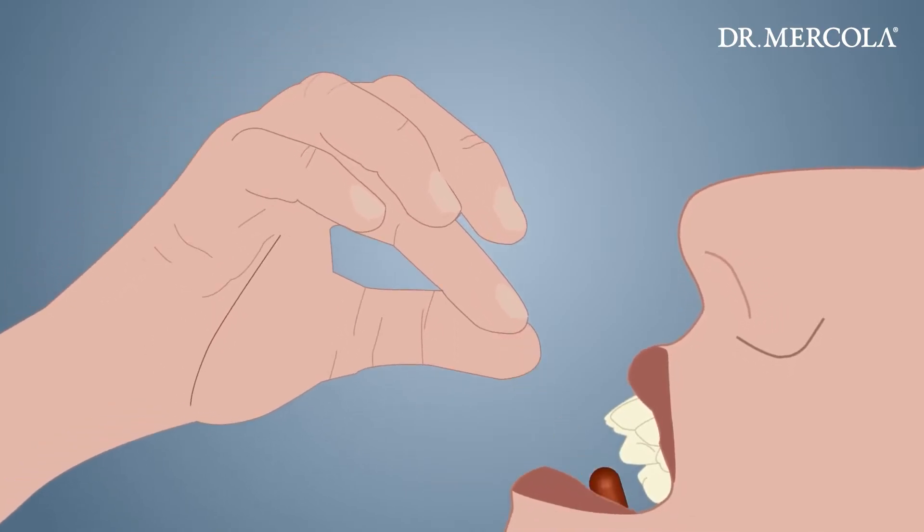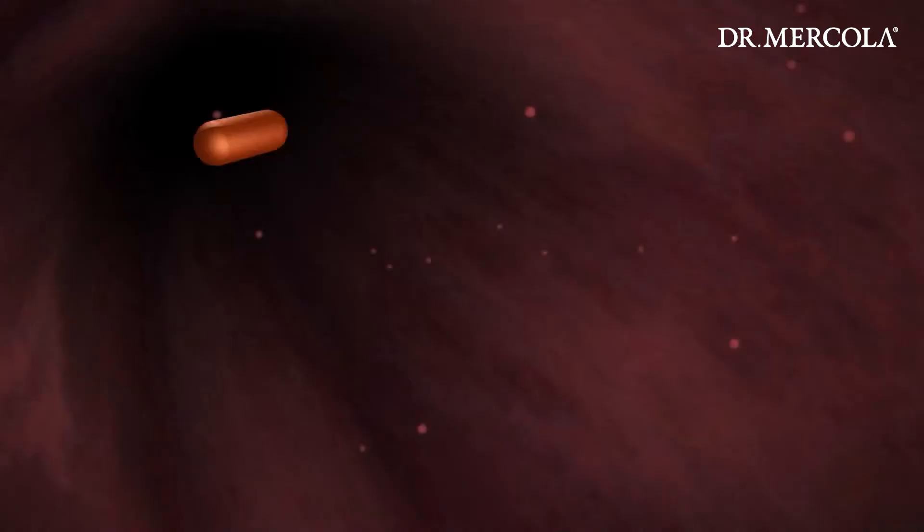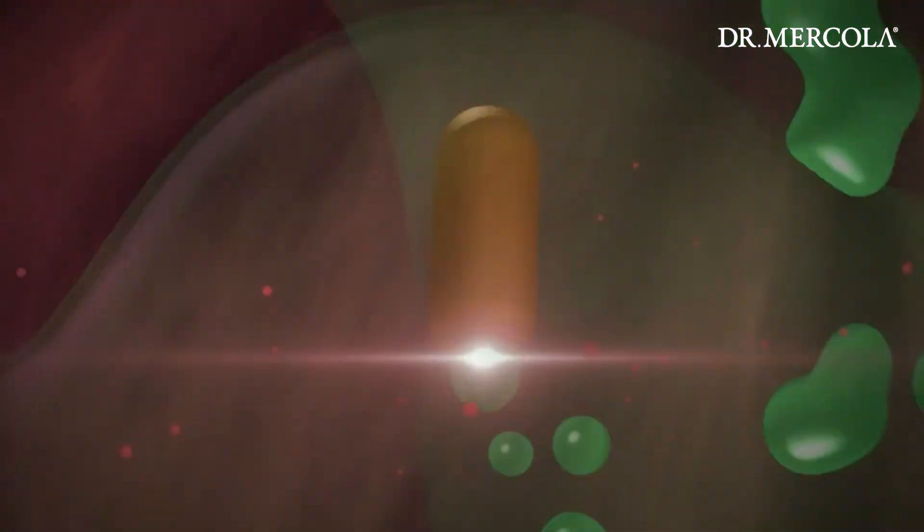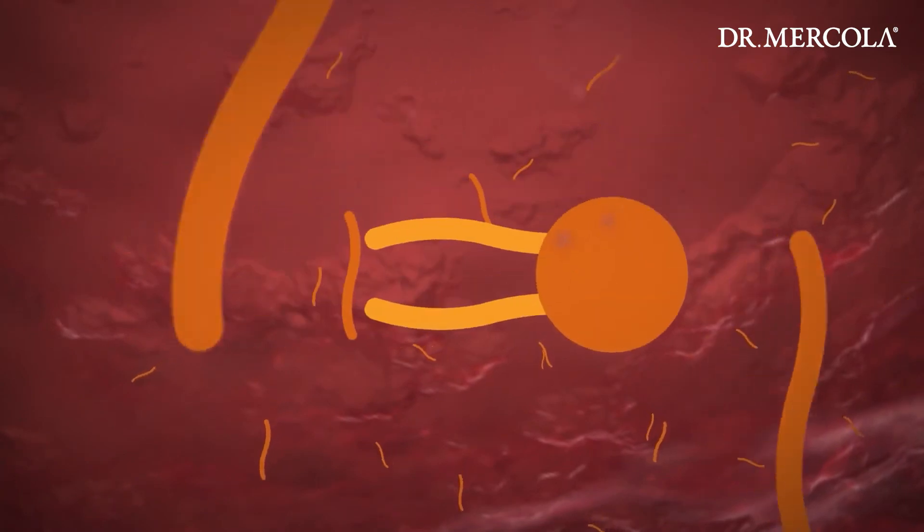When you swallow a krill oil capsule, it goes into your stomach and then your intestines. The acids in your stomach will cause the capsule to disintegrate and release its contents. Our krill oil capsules deliver their beneficial omega-3 fatty acids attached to phospholipids.